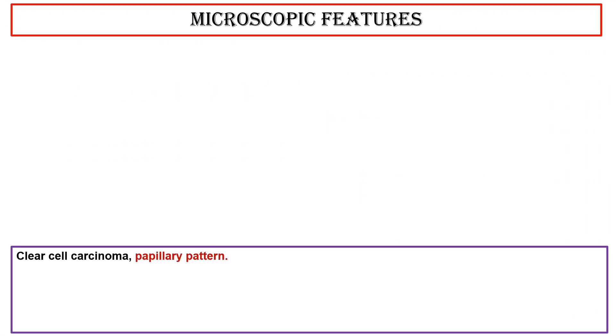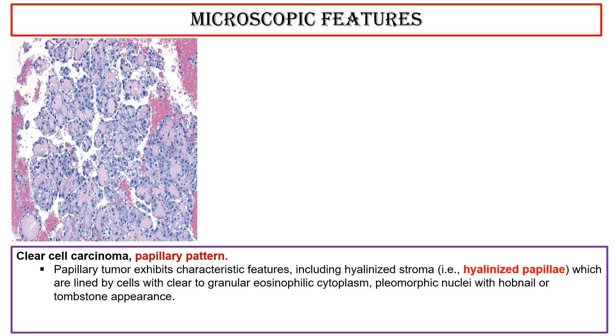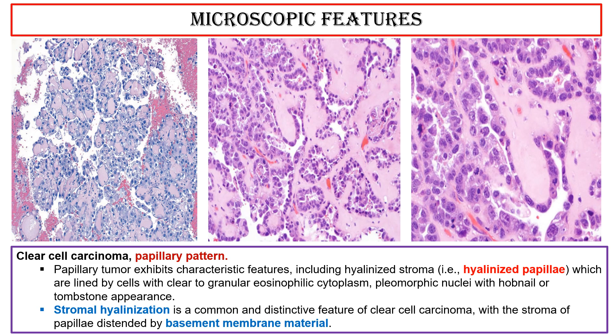Clear cell carcinoma — papillary pattern: this photo shows a papillary tumor exhibiting characteristic features including hyalinized stroma — hyalinized papillary cores — lined by cells with clear to granular eosinophilic cytoplasm and pleomorphic nuclei with hobnail or tombstone appearance. Stromal hyalinization is a common and distinctive feature of clear cell carcinomas, with stroma of papillary cores distended by basement membrane material.